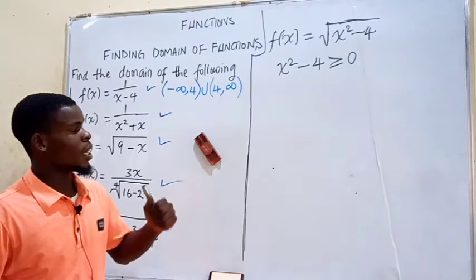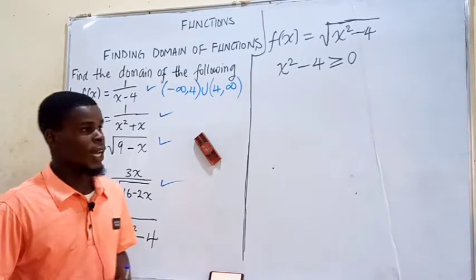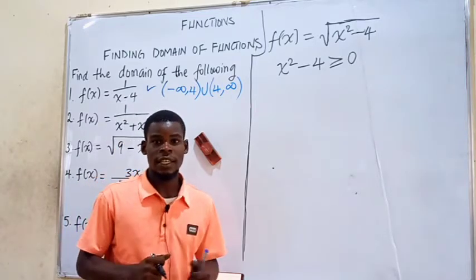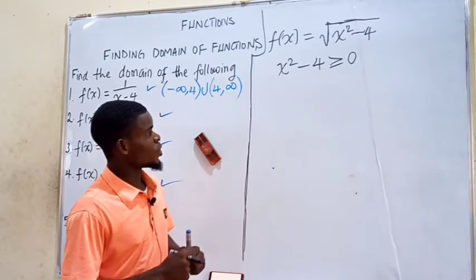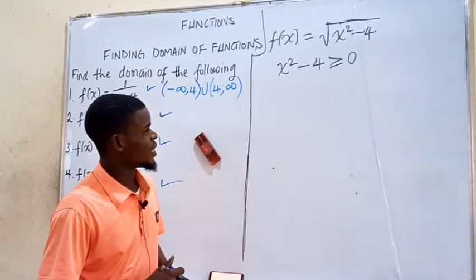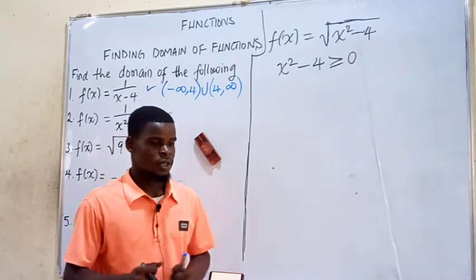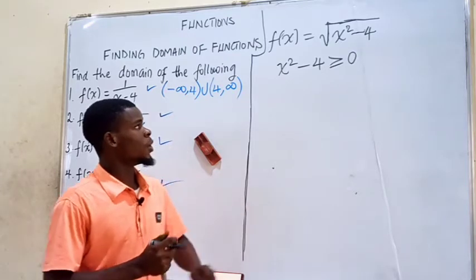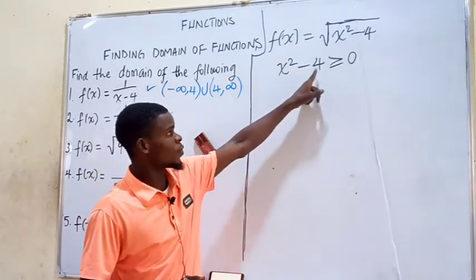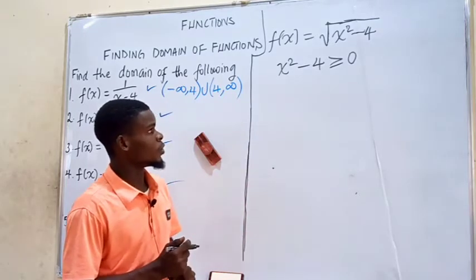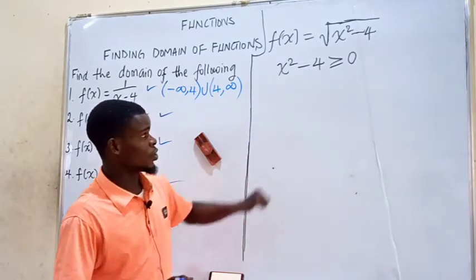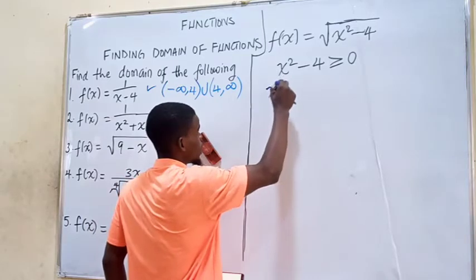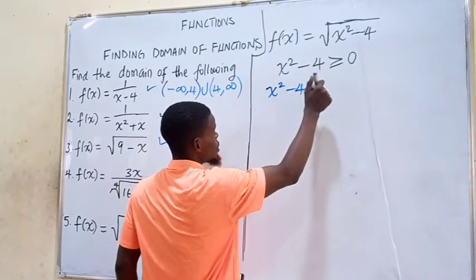We observe here that we're dealing with a quadratic inequality, and the way we solve a quadratic inequality is different from the way we solve a linear inequality. We are going to use some intervals to test. The next step is to ignore the inequality and just equate this expression to 0, and see how we can proceed from there. So let's equate x squared minus 4 to 0.